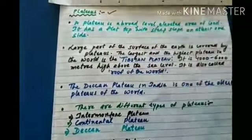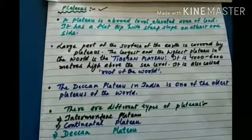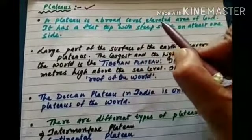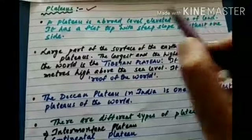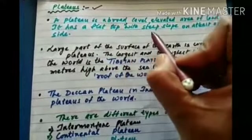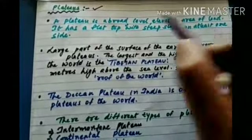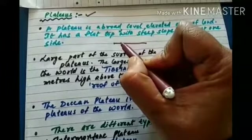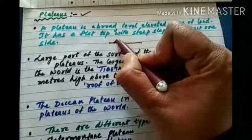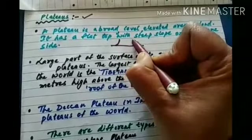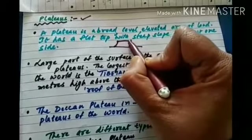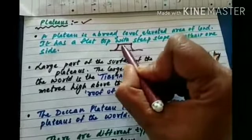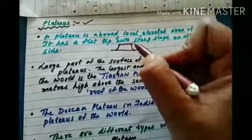For studying about plateaus, we should know what is a plateau. A plateau is a broad level elevated area of land. It has a flat top with steep slope on at least one side. The plateau is an elevated area that rises upward like a table — it has a flat surface on the top.